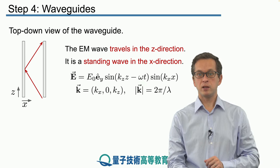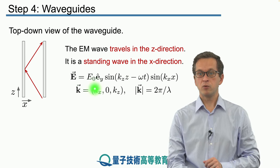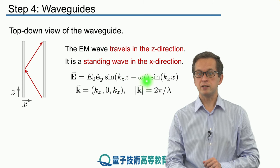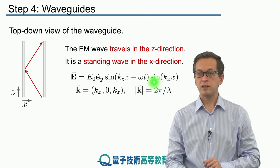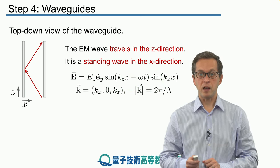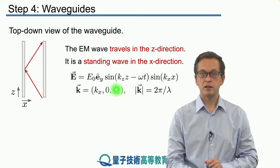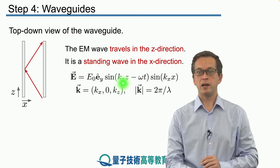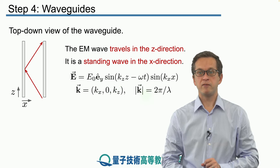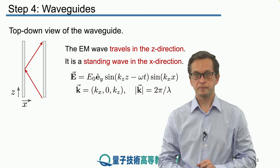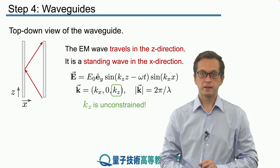It's given by the following electric field. We've got some amplitude in the y direction, and we've got our traveling wave in the z direction, and we've got our standing wave in the x direction. I remind you that k vector is given by these components, kx, ky is 0, and kz. And the magnitude of the k vector is related to the wavelength of the electromagnetic radiation.